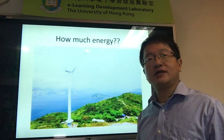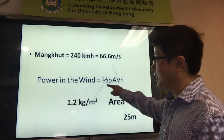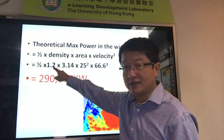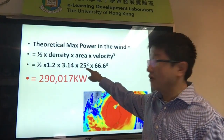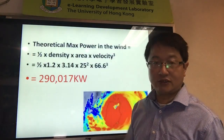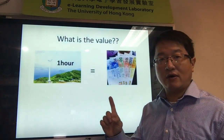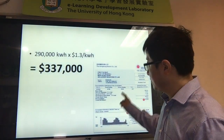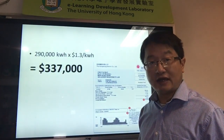So what does it mean? How much energy, how much value can we get? If we put all these numbers into the equation, the power in the wind will be half multiplied by the density, multiplied by pi and 25 — which is the radius of the Lamma Island wind turbine — and the cube of the velocity, 66, which is equivalent to 290 kilowatts. So in one hour, if we multiply by the unit rate of 1 kilowatt per hour, it's equivalent to around 337,000 HKD.